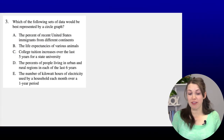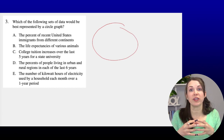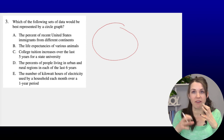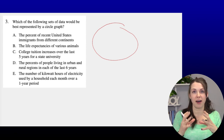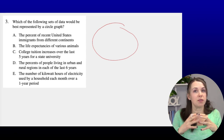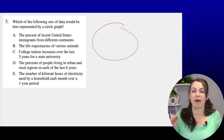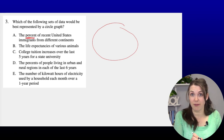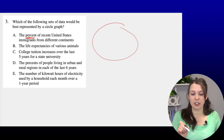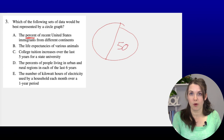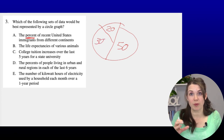Number three: Which of the following sets of data would be best represented by a circle graph? Circle graphs typically show percentages that add up to 100. Option A — the percent of recent United States immigrants from different countries — works perfectly: you might have 50% from one country, 20% from another, 30% from another. That adds up to 100 and fits a circle graph well.